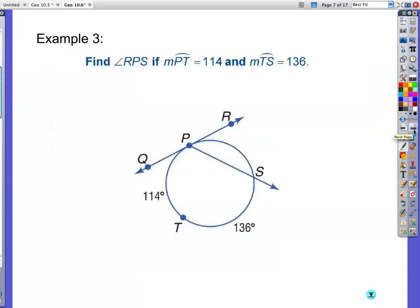Here we go. Actually, that's what they're giving you. This is your arc right here. 114 plus 136. Isn't that 250? So if this is 250 degrees, this angle right here is half that, which is 125. And they want us to find angle RPS. Well, if this is 125, angle RPS is 180 minus 125. I believe that gives you 55 degrees.